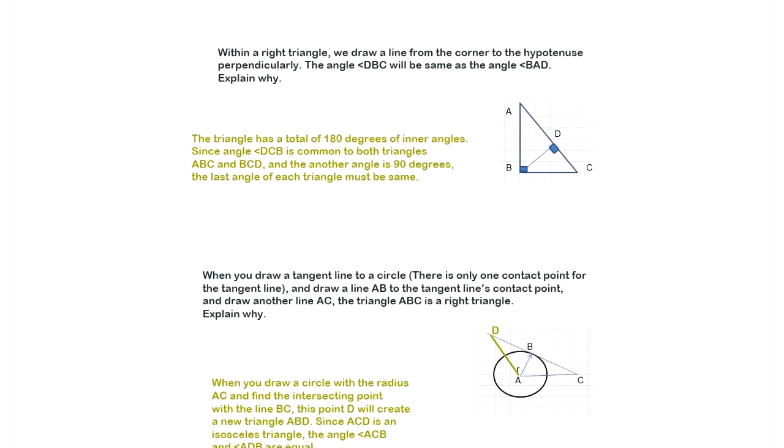Within the right triangle, we draw a line from the corner of the hypotenuse perpendicularly. The angle DBC will be same as angle BAD. So this and this angle same. Explain why. Well, this is common, right? So this guy is 90 minus, say this is a. So this is 90 minus a. So it's the same angle. So prove triangle ABD are similar to triangle ACB. Can you do that?